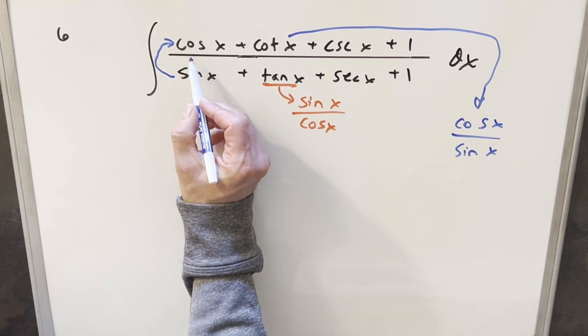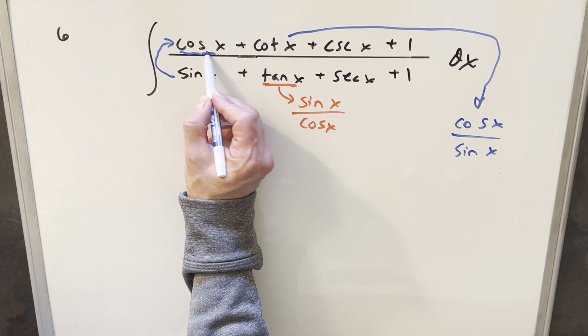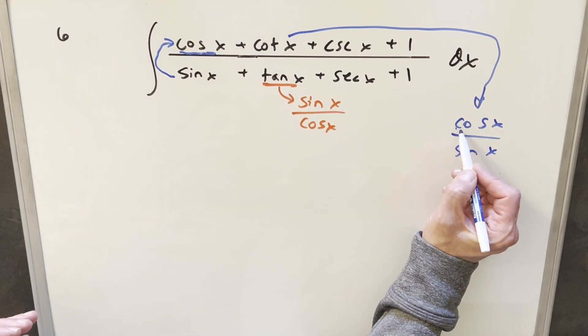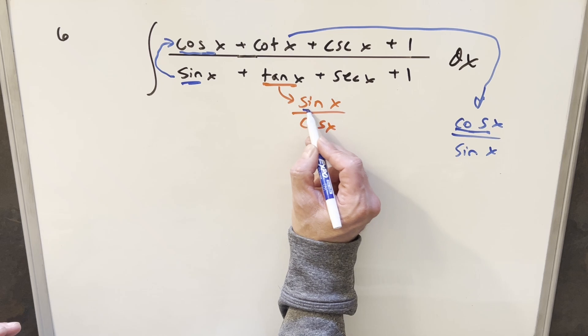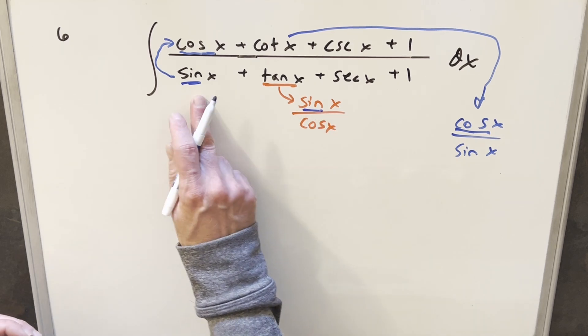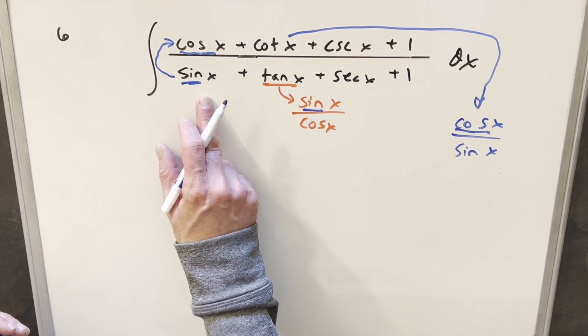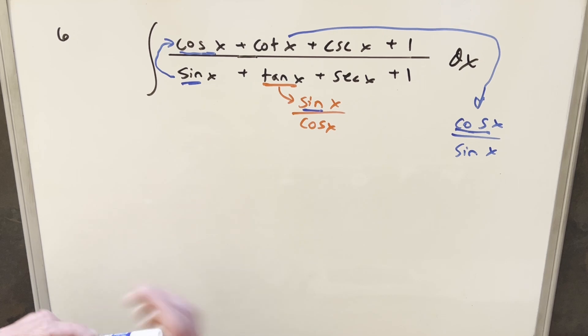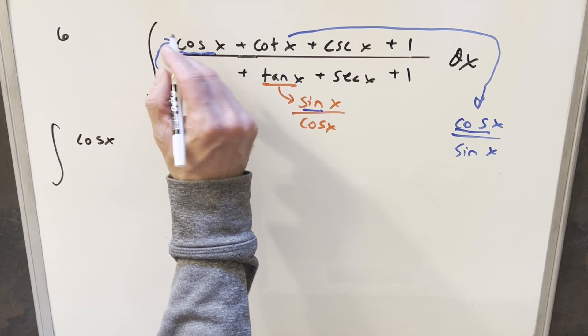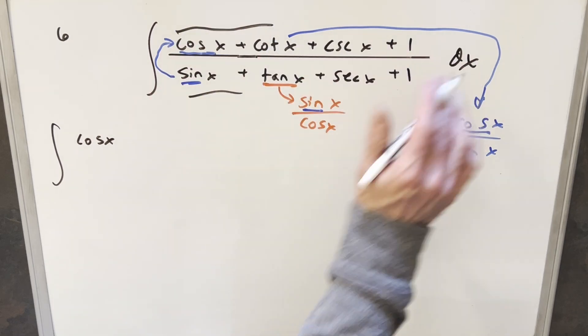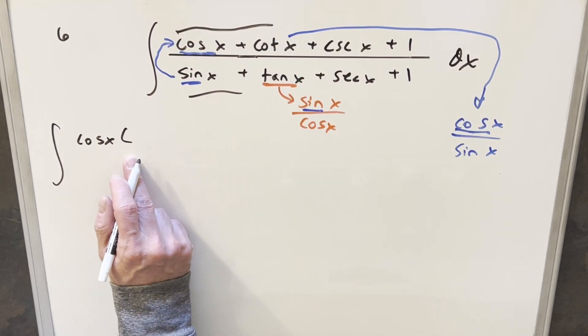But what that does is it kind of gives me a starting point for factoring. We have cosine x here and then in the cotangent we have cosine x, and then we have sine x here and then we have sine x here on the tangent. So we can factor a sine x out in the denominator and we can factor a cosine out in the numerator. So let's see how this is going to look when I rewrite this.